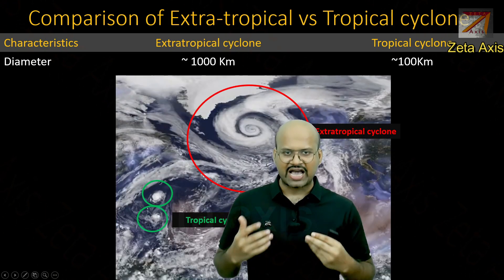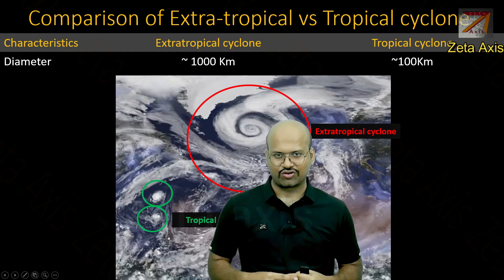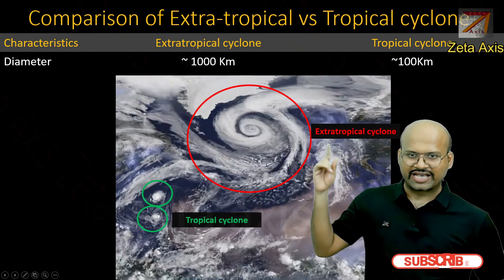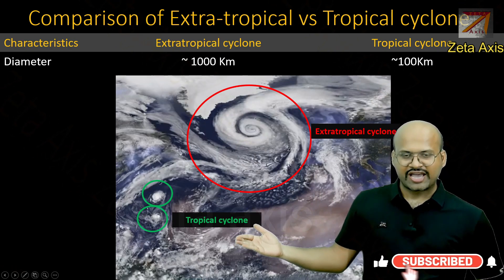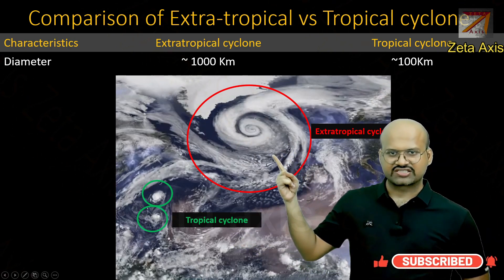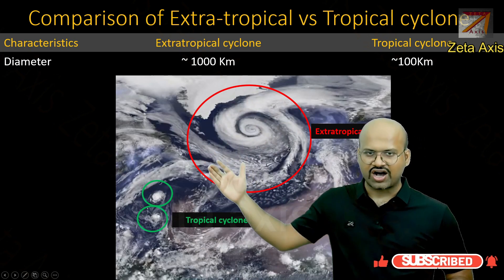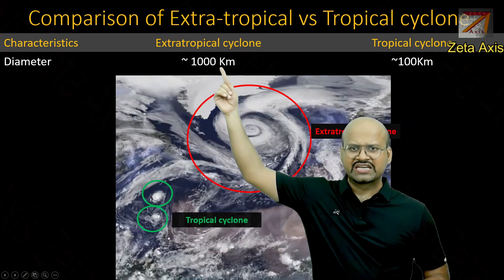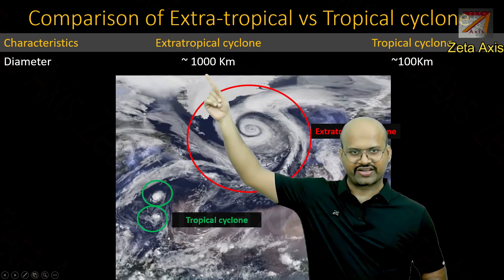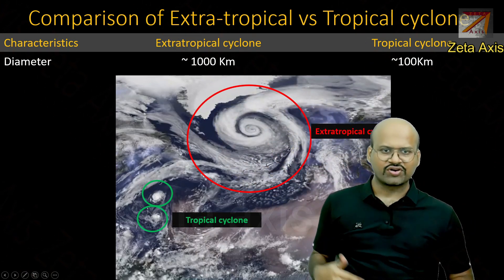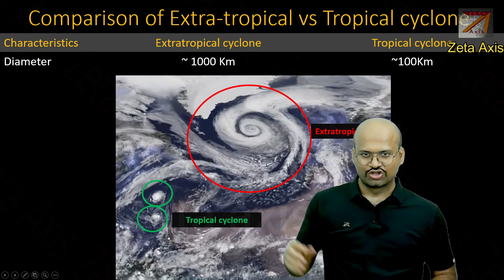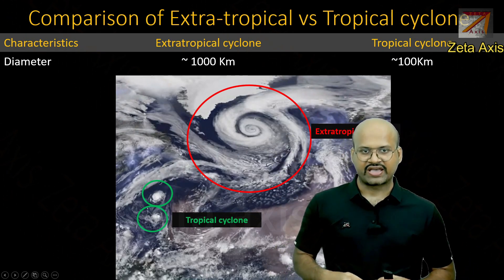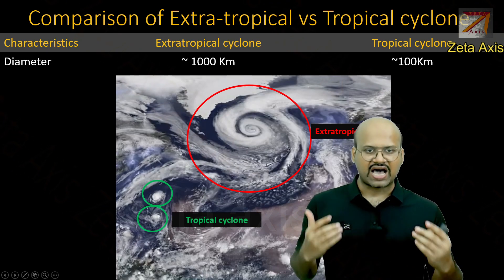Then there is the diameter or size of these cyclones. In this image we have marked both extratropical cyclone and tropical cyclones, and you can see that the extratropical cyclone covers a very vast area compared to tropical cyclones. It can be thousands of kilometers in radius, while tropical cyclones can have around hundreds of kilometers in radius. Clearly, extratropical cyclones are much bigger and affect a very large area.